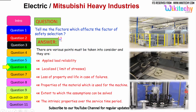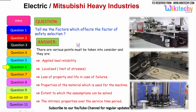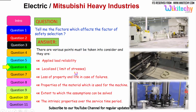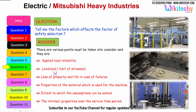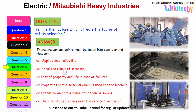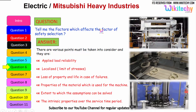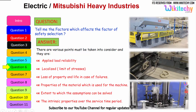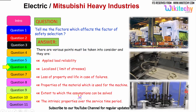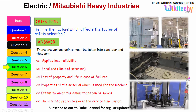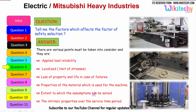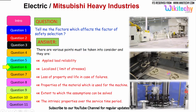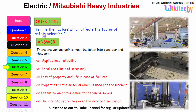Let us see the factors which affect the factor of safety selection. These include: applied load reliability; limit of stresses thus localized; loss of property and life in case of failure — this is a very important factor. Also, the properties of the material used for the machine; the extent to which the assumptions can be solved — how much it will extend, compress, etc. The intrinsic property over the service time period — how it will sustain — everything needs to be evaluated for factor of safety selection.